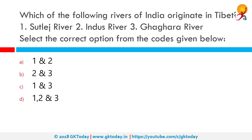Which of the following rivers of India originate in Tibet? One: Satlej River. Two: Indus River. Three: Ghagra River. The correct answer is all three — all of these rivers originate in Tibet.